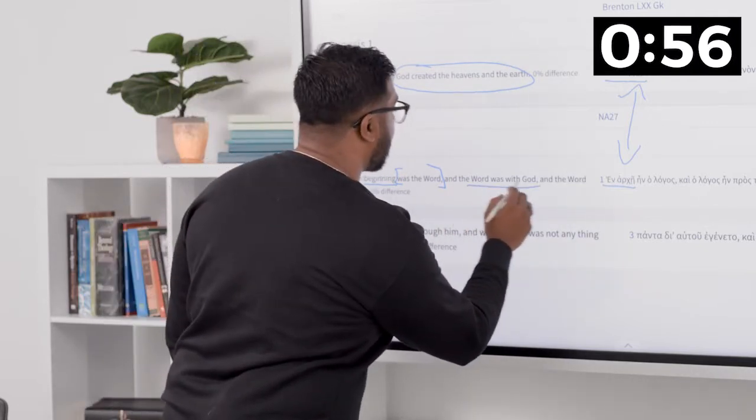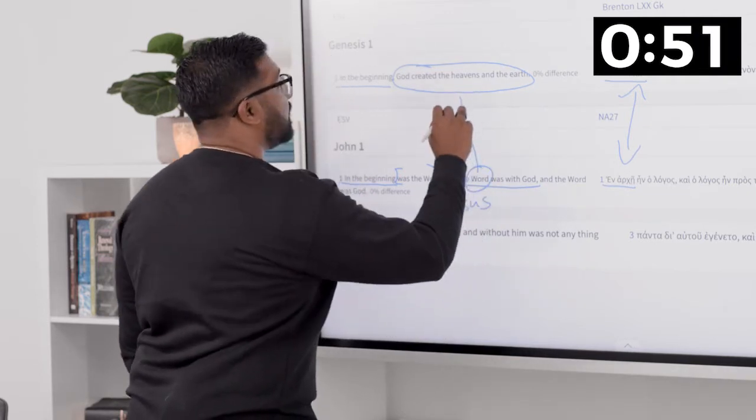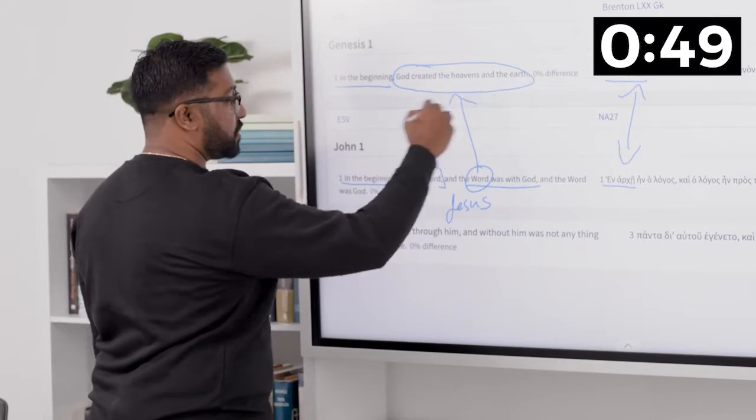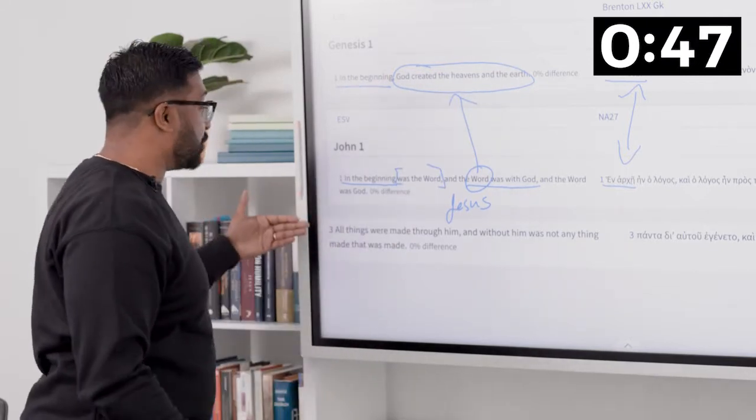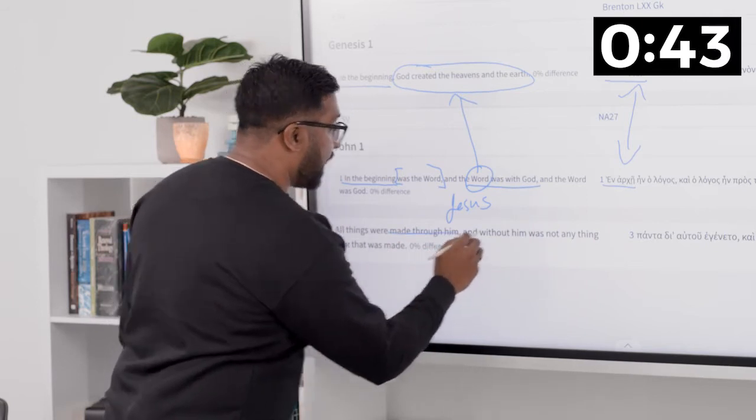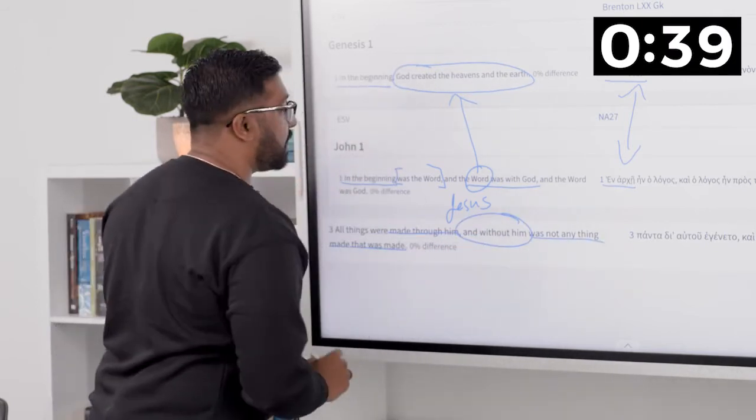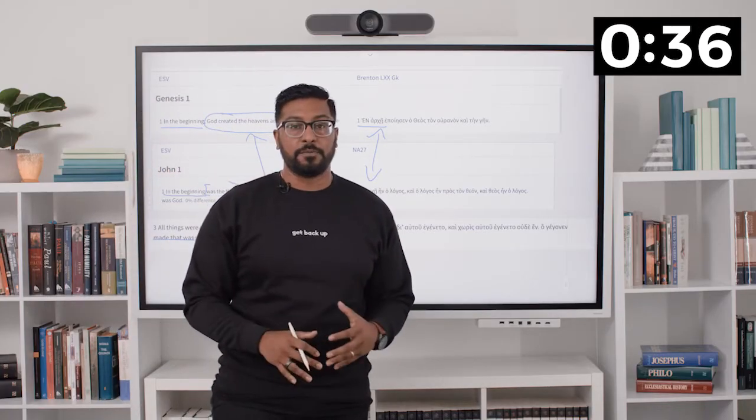The word was with God, which means the word, who we know is Jesus, is actually participating in the creation of the heavens. How do we know that? John 1 verse 3: All things were made through him, and without him was not anything made that was made. This is pretty incredible.